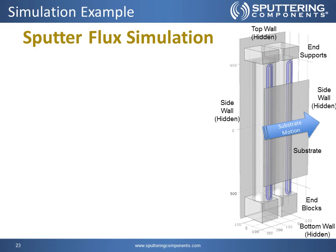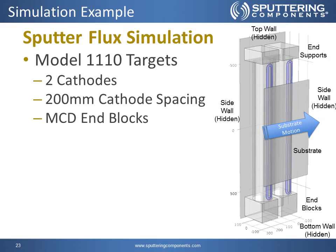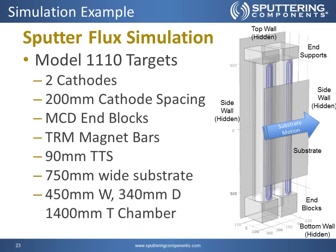Next, we will look at the sputter flux simulation. We'll model the 1,110mm targets in a system with two cathodes, a 200mm cathode-to-cathode spacing, using MCD end blocks, TRM magnet bars, a 90mm TTS, the 750mm wide substrate, and a 450mm wide by 340mm deep by 1,400mm tall chamber.